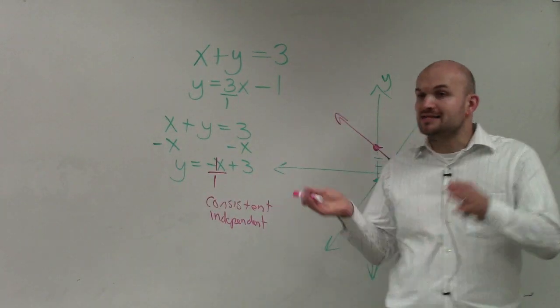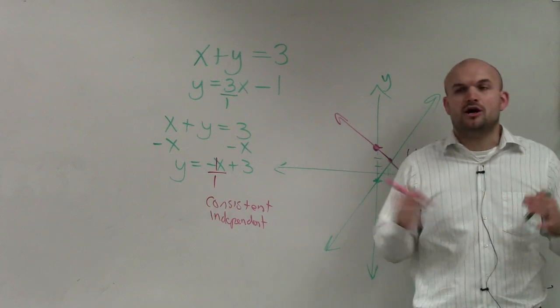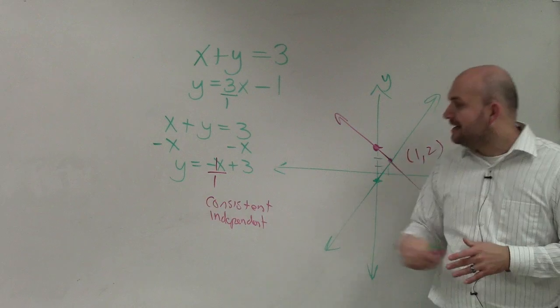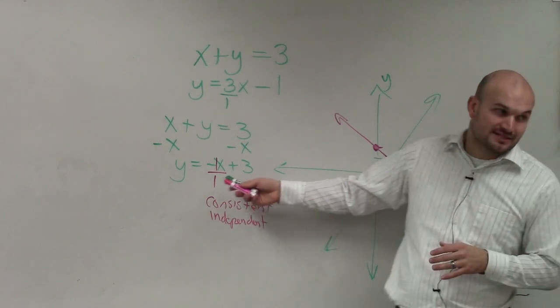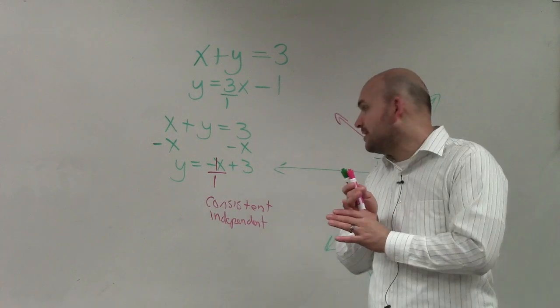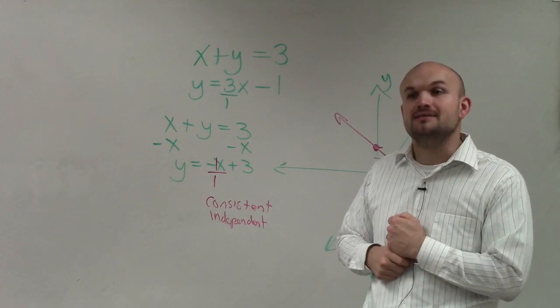If they were parallel lines and never intersected, we call that inconsistent. If they intersect, that's consistent. But if they intersect indefinitely, meaning they're the same line, we call those dependent.